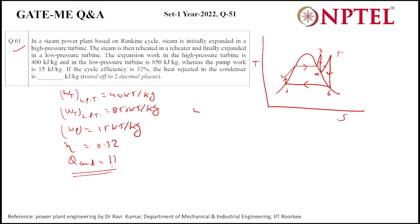So net work done from the whole cycle would be 400 plus 850, means both turbine work minus pump work. So when we do this, it will become 1235 kilojoules per kg.